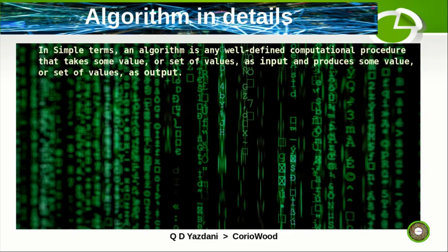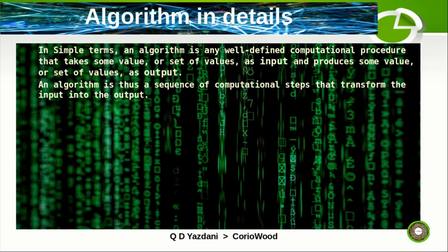We dive deep into the world of algorithms to see what an algorithm is in detail. In simple terms, an algorithm is any well-defined computational procedure that takes some value or set of values as input and produces some value or set of values as output. An algorithm is a finite sequence of computational steps that transform the input into the output.